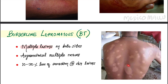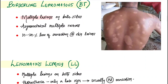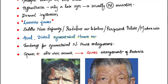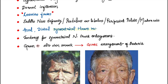Borderline lepromatous (BL) presents with multiple lesions on both sides with asymmetrical multiple nerve involvement and 10 to 20 percent loss of sensation at the skin lesions. In lepromatous leprosy (LL), multiple lesions on both sides are seen, but hypoesthesia is only a late sign — sensation is usually normal in the early stages. There is dermal infiltration, and the characteristic facial feature is leonine facies, resembling a lion, with saddle nose deformity, pendulous ear lobes, perforated palate, and madarosis.